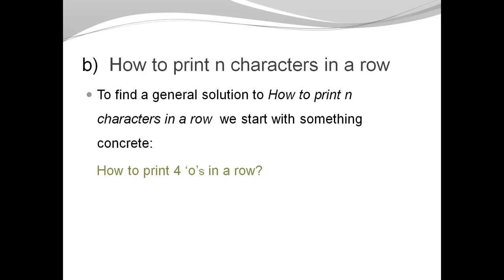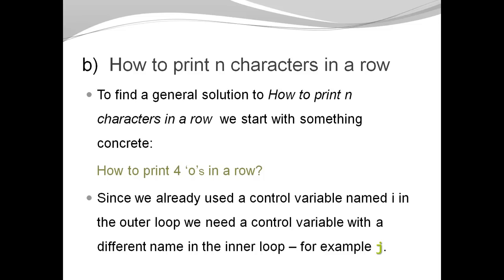Now we need to figure out how to print n characters in a row. To find a general solution to how to print n characters in a row is start with something concrete. Let's say how to print 4 circles in a row. And that sounds a lot like a typical for loop example. One thing to keep in mind though is that we are planning code that is going to be executed inside the outer for loop. That means the typical control variable name i is already taken at that point. i is the control variable of the outer loop.